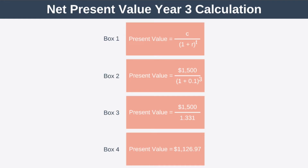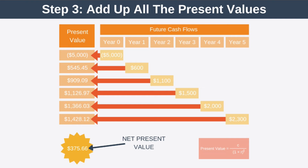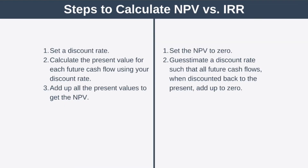Now notice that money in the future isn't worth as much to us as money in our hands today, because of the time value of money. Again, check out our video on net present value if you need a recap of what that means. So the final step is to add up all the present values, which in this case gives us a net present value of $375.66. So now that we understand how to calculate net present value, let's calculate internal rate of return. To calculate this, we flip the equation around.